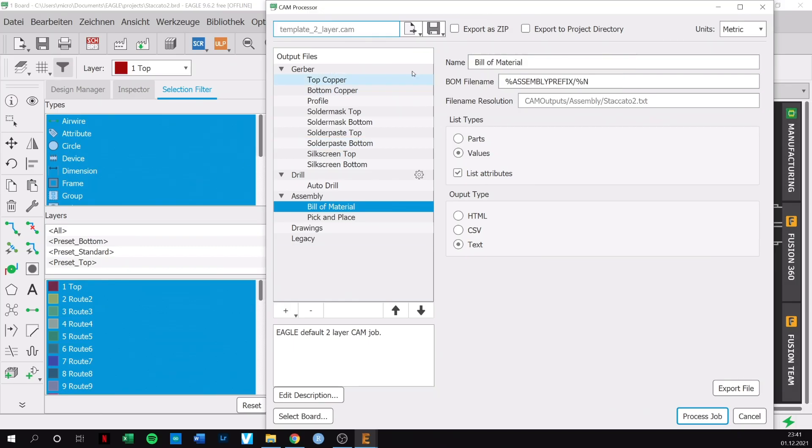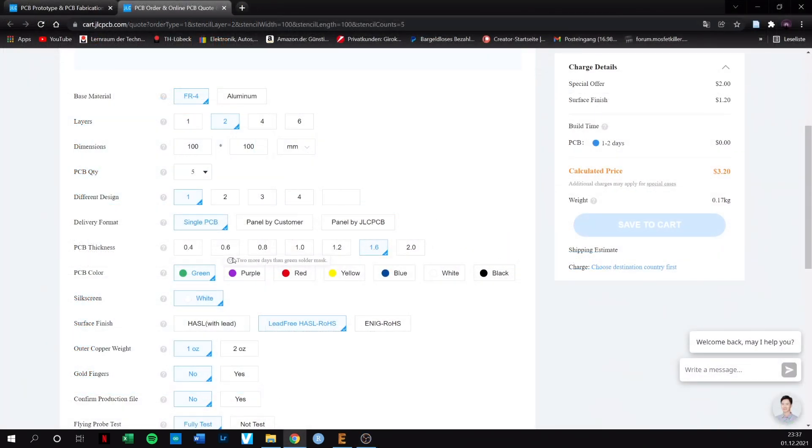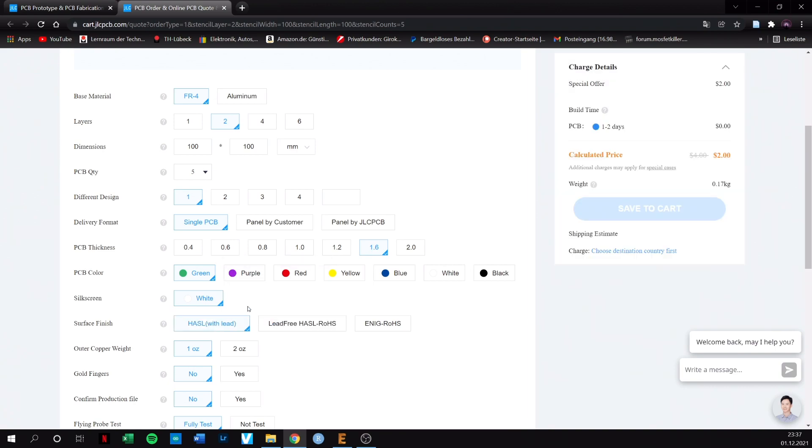The only thing you have to do is save your Gerber file as a zip file. Once this is done select the desired parameters. Lead free? Yeah, definitely. What color are you in favor of?